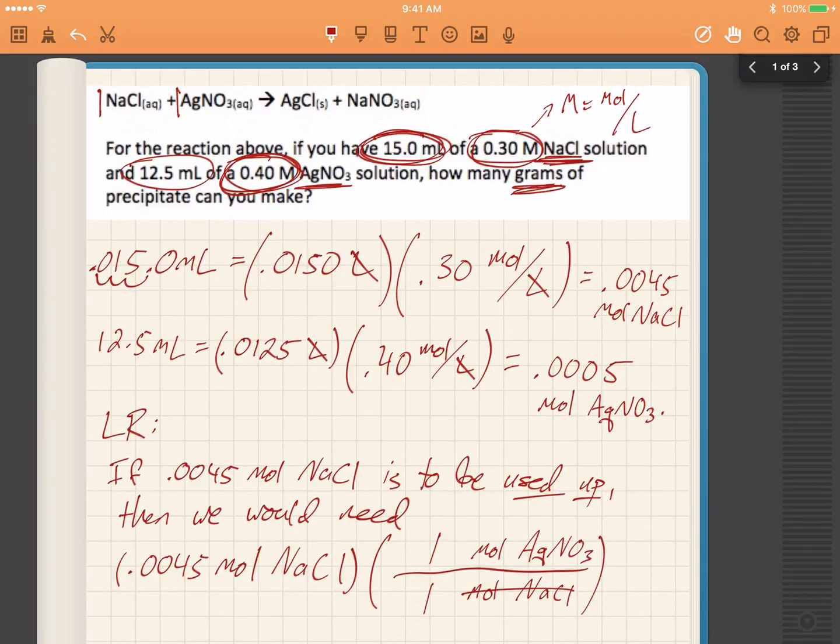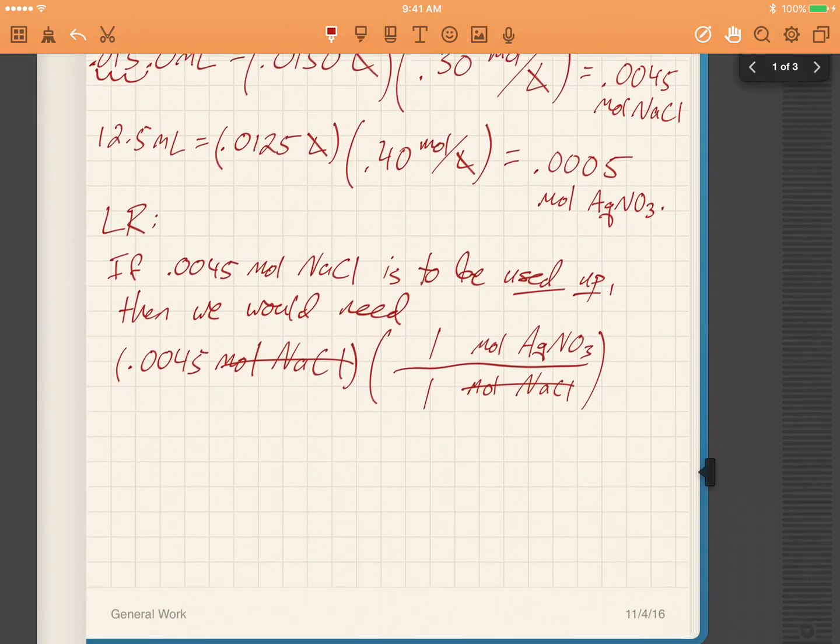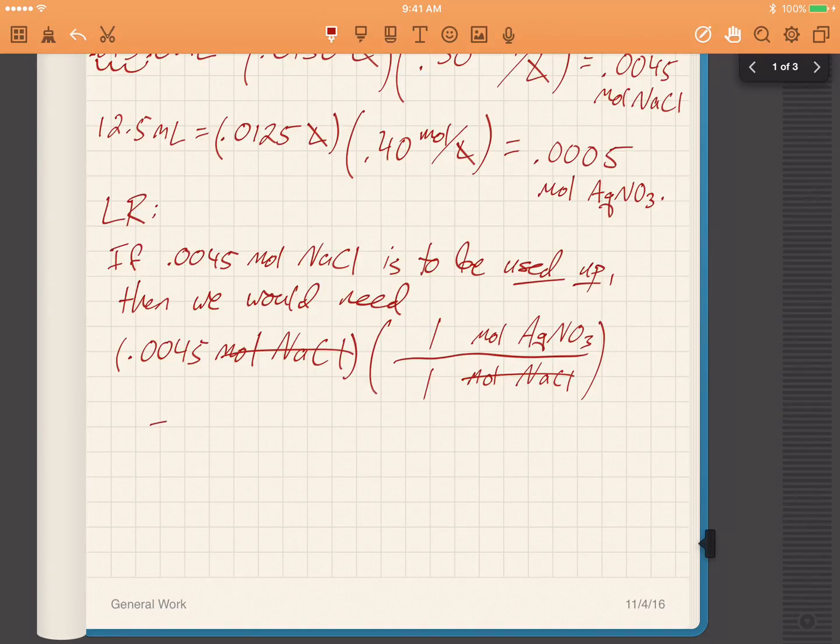The units go away, and I'm left with 0.0045 times 1 over 1. Well, that's obviously the same as times 1. So 0.0045 moles of AgNO₃ is my unit now.